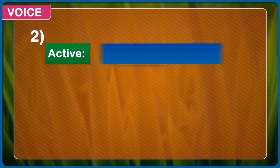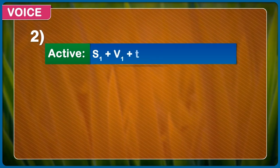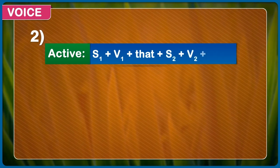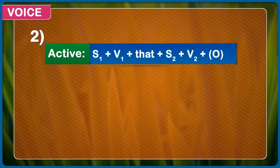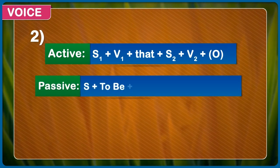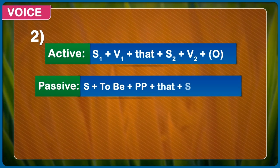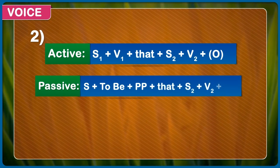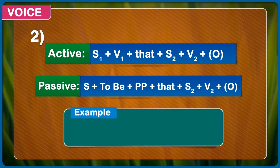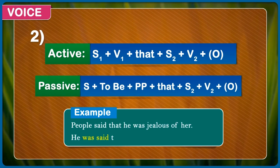Second — Active: first subject + first form of verb + that + second subject + second form of verb + object. Passive: subject + to be + past participle + that + second subject + second verb + object. Example: People said that he was jealous of her. He was said to be jealous of her.